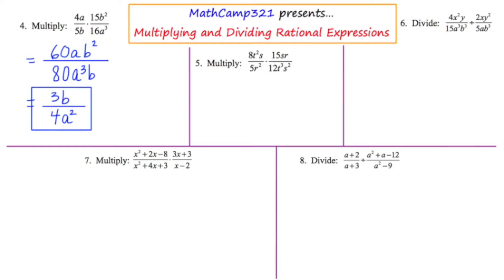You can't obliterate things when you cross them out — you have to just gently cross them out. The first thing I'm focusing on are the 5 and the 15. That's just what my eye was drawn to first. I'm going to cross those out, leaving me with a 3 on the top. I'll write it in a circle to remind me that it's still there.